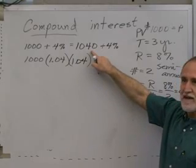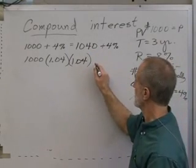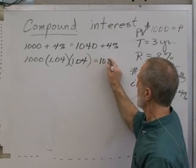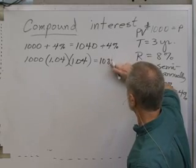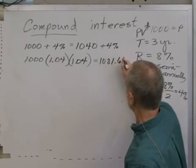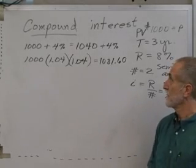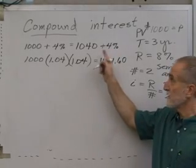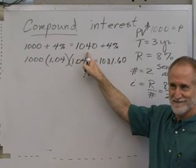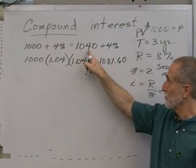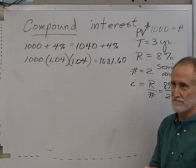And that should be more than 1,080, shouldn't it? What do we get now? 1,080, 81.60? Ooh, we got an extra dollar and 60 cents. Where'd that come from? It came from 4% of that $40, the interest on the interest. 4% of that $40 was the $1.60 extra that we earned. Okay?